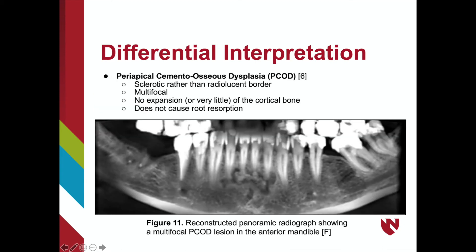Periapical cementoosseous dysplasia, also known as PCOD, is a possible differential interpretation. There are key differences between an ossifying fibroma and PCOD. PCOD demonstrates a sclerotic rather than a radiolucent border and is often multifocal. Little, and sometimes no, expansion of the cortical bone is seen in PCOD. The reconstructed panoramic radiograph shows an example of multifocal PCOD in the anterior mandible, which is a common place to find PCOD.